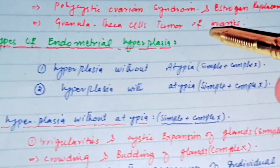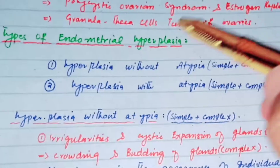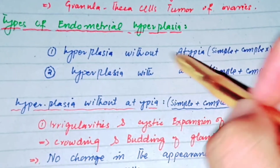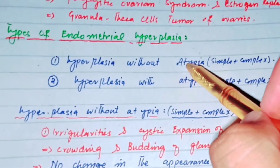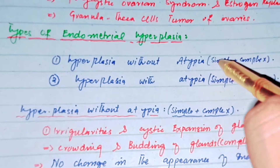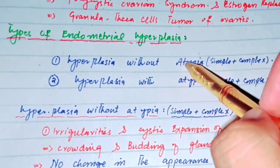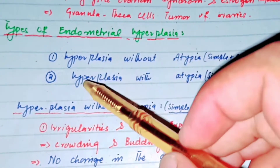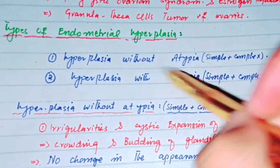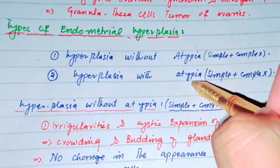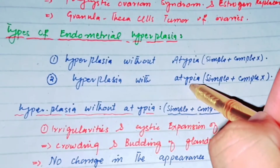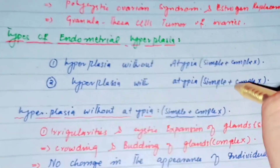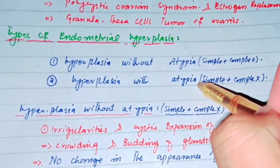There are four types of endometrial hyperplasia according to the WHO classification. The first is hyperplasia without atypia, which is further divided into simple hyperplasia without atypia and complex hyperplasia without atypia. The second is hyperplasia with atypia, also further divided into simple hyperplasia with atypia and complex hyperplasia with atypia.